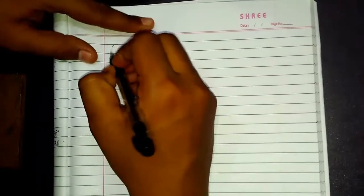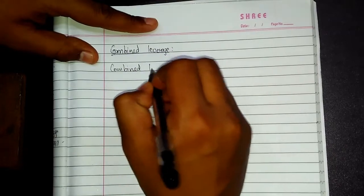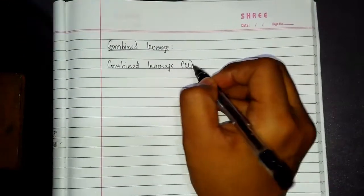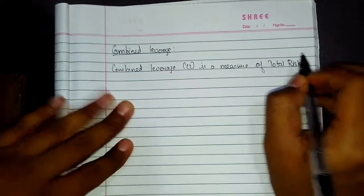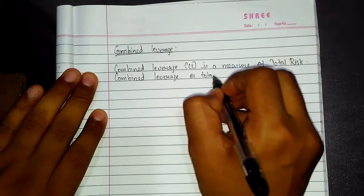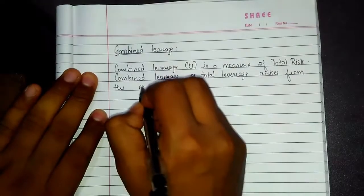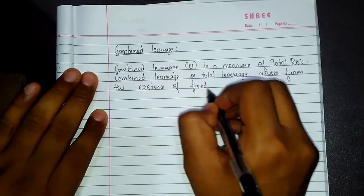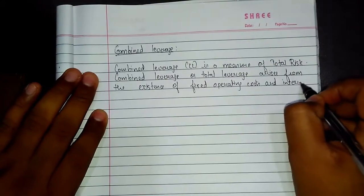In the previous video we completed operating leverage and financial leverage. Let's move on to combined leverage. Combined leverage (CL) is a measure of total risk. Combined leverage or total leverage arises from the existence of fixed operating costs and interest expenses.